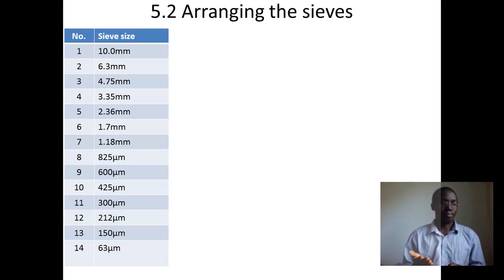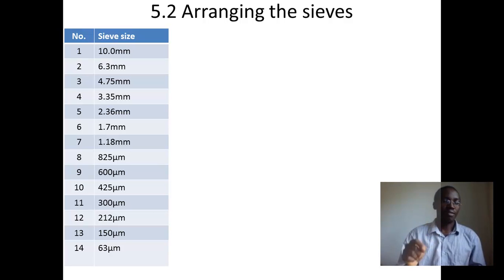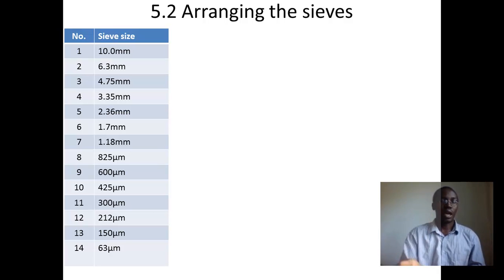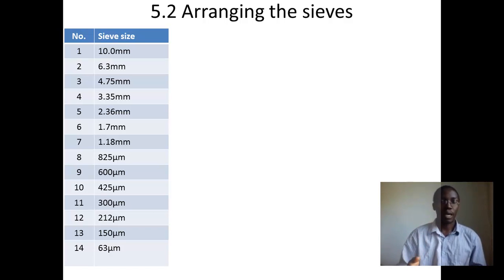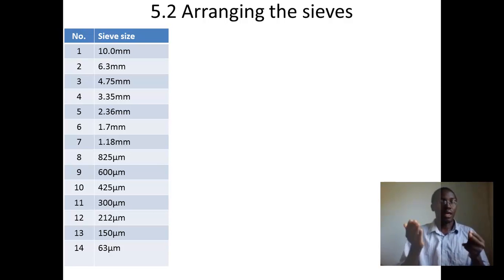Arranging the sieves: the table shows the sieve sizes to be used while carrying out the sieve analysis test. There are about 14 sieves: 10 mm, 6.3 mm, 4.75 mm, 3.35 mm, 2.36 mm, 1.7 mm, 1.18 mm (those are in millimeters), 825 micrometers, 600 micrometers, 425 micrometers, 300 micrometers, 212 micrometers, 150 micrometers, and 63 micrometers.